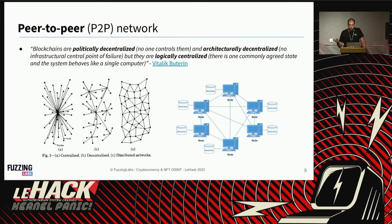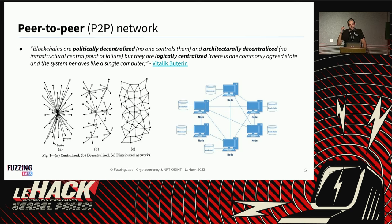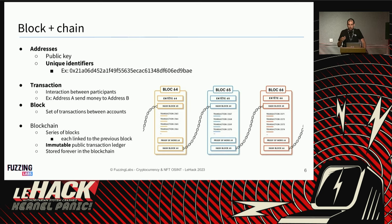What nodes send to each other are blocks and transactions. Politically, a blockchain is decentralized — nobody controls the network. Architecturally it's also decentralized with multiple nodes speaking to peers. But in terms of logic it's purely centralized: all nodes run the same code and interpret blocks the same way, ensuring consistency across the network.